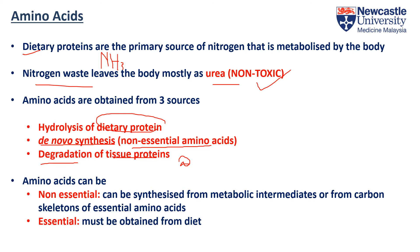Amino acids can be classified as essential or non-essential. The non-essential amino acids refer to the ones that we can synthesize ourselves by using the metabolic intermediates from the carbon skeleton. For the essential amino acids, because we cannot synthesize these amino acids ourselves, they must be ingested from our diet.